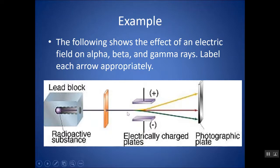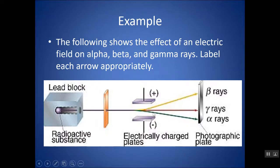Consider the following electric field example: particles are emitted from a radioactive substance and deflected by an electric field with a positive side and a negative side. The yellow particle being deflected toward the positive side would have a negative charge — that's the beta particle. The green particle being deflected toward the negative side has a positive charge — that's the alpha. The gamma, having no mass and no charge, is not deflected at all. Notice the beta gets deflected even more than the alpha because it is lighter — the beta has essentially no mass, while the alpha has a mass of 4.